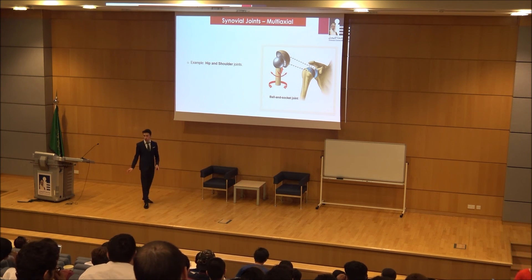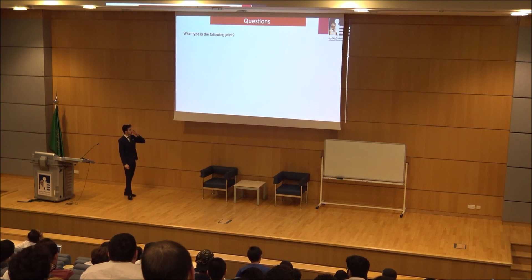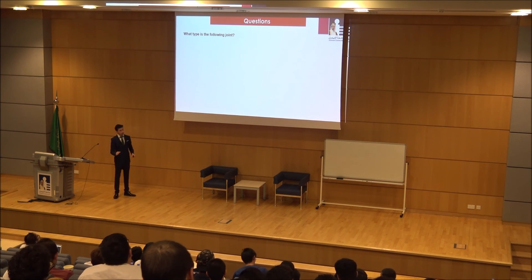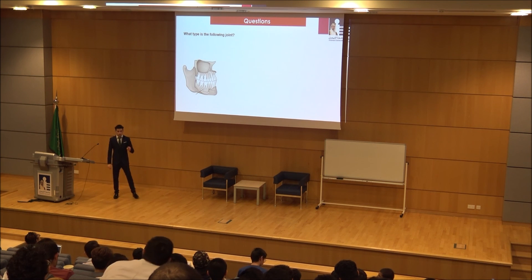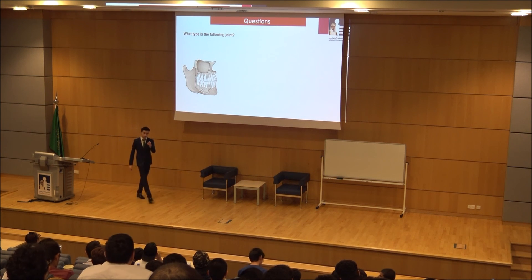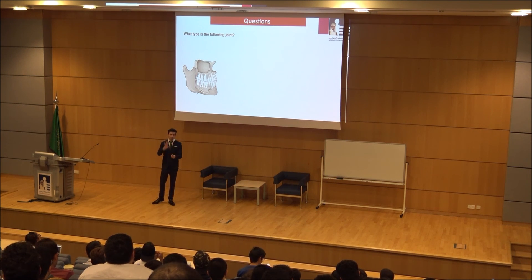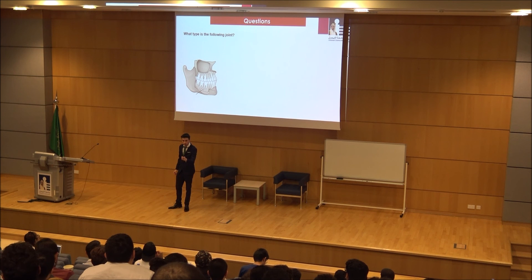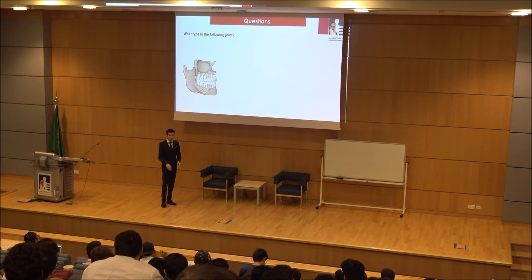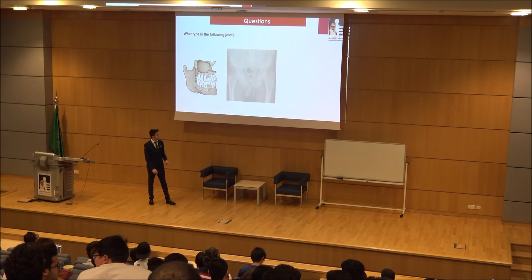Now some questions to ensure understanding. Question one: what is the type of this joint? The answer — fibrous, subtype gomphosis. Gomphosis fibrous joint. Correct. Question two: you're looking at an X-ray of the hip joint — what type of joint is this?